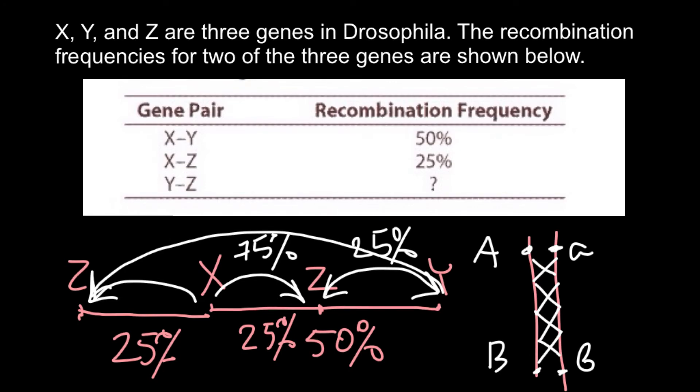you would find that crossing over can never exceed 50%. So that gives us information that gene Z has to be between gene X and Y, and gene X and Y probably positioned on the ends of the chromosome, so have the highest probability of crossing over.